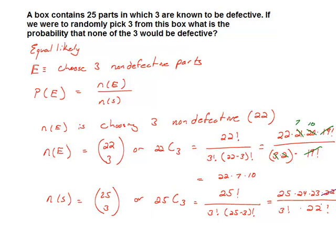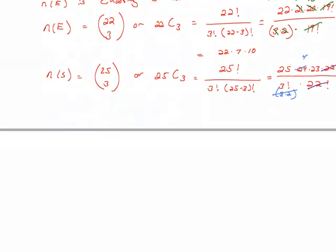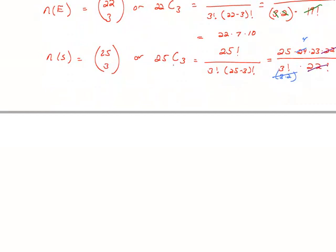The 22 factorial cancel out. And then the 3 factorial is 3 times 2, which is 6. I know that divides into 24 four times. So we have that the number of ways that we can choose 3 out of 25 is 25 times 4 times 23.